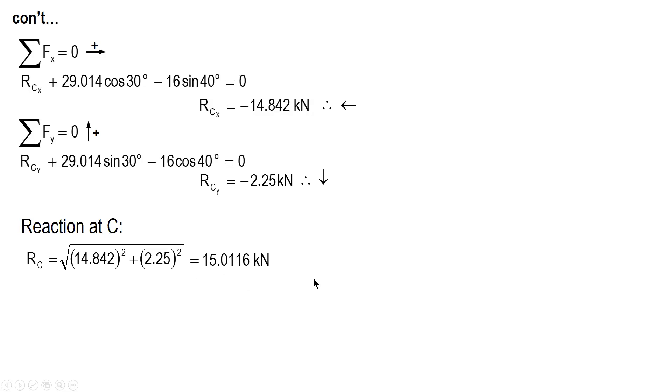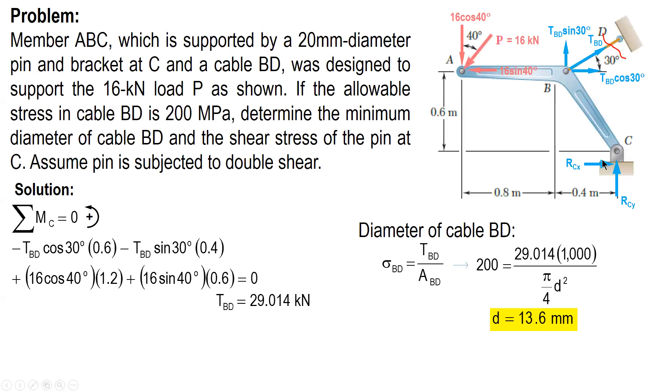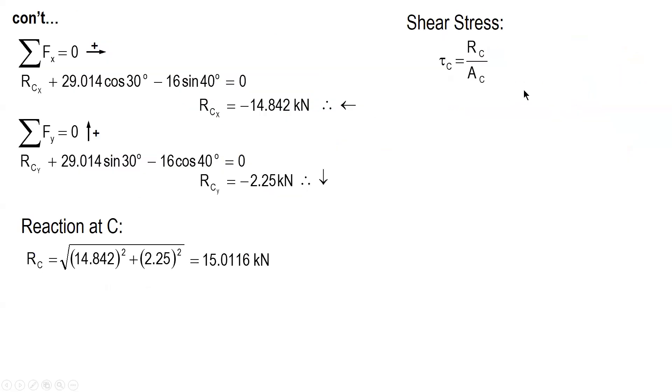Okay. So after this, we now compute for the stress, shear stress. The area is given. I mean, the diameter is given, and double shear also. So times two the area. So two times pi over four diameter squared. For the force, since kilonewton, we convert to newtons, we multiply the value by 1,000. And compute, the value of the shear stress at C is 23.89 megapascals.